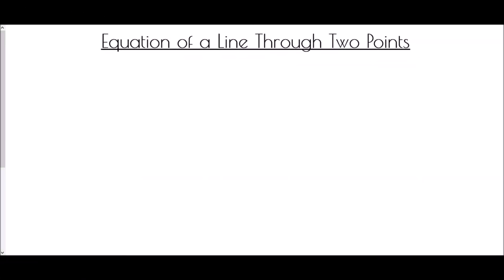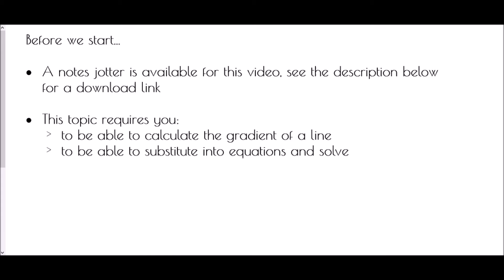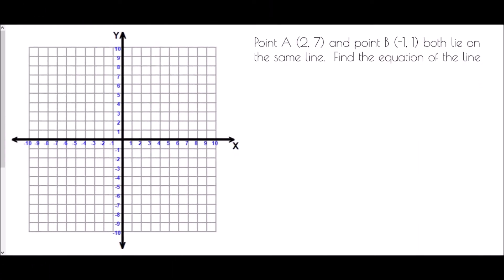Hi and welcome to equation of a line through two points. Just a reminder that there is a note sheet available for this video — check the description below for a download link and you can work along with me. We've been told that point A is (2, 7) and point B is (-1, 1), and they both lie on the same line. Find the equation of the line.